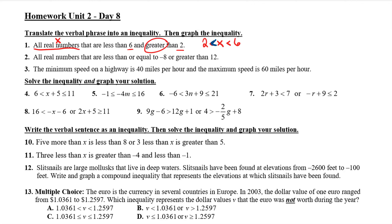If that's confusing to you, don't really worry about it. Just remember whenever you have an 'and' inequality, you write it together from least to greatest with less than symbols, and the x always goes in the middle. So that's what you're going to do on that one and number three. Number two is going to be a little different because it's not an 'and' inequality, it's an 'or' inequality. So this is going to be written as two separate inequalities, and you're going to write 'or' in the middle of them.